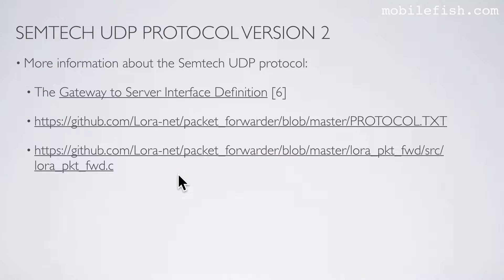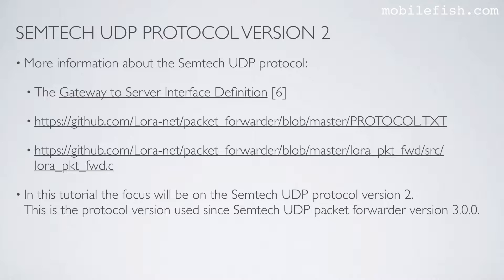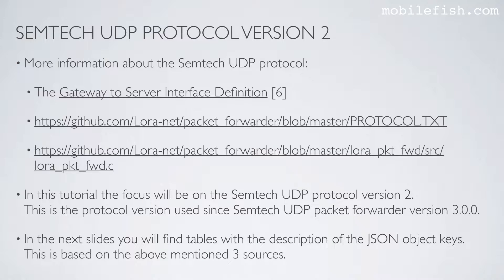For more information about the Semtech UDP protocol, see the three links provided. All references can be found in tutorial 1. In this tutorial the focus will be on the Semtech UDP protocol version 2. This is the protocol version used since Semtech UDP Packet Forwarder version 3.0.0. In the next slides you will find tables with the description of the JSON object keys, based on the above mentioned three sources.